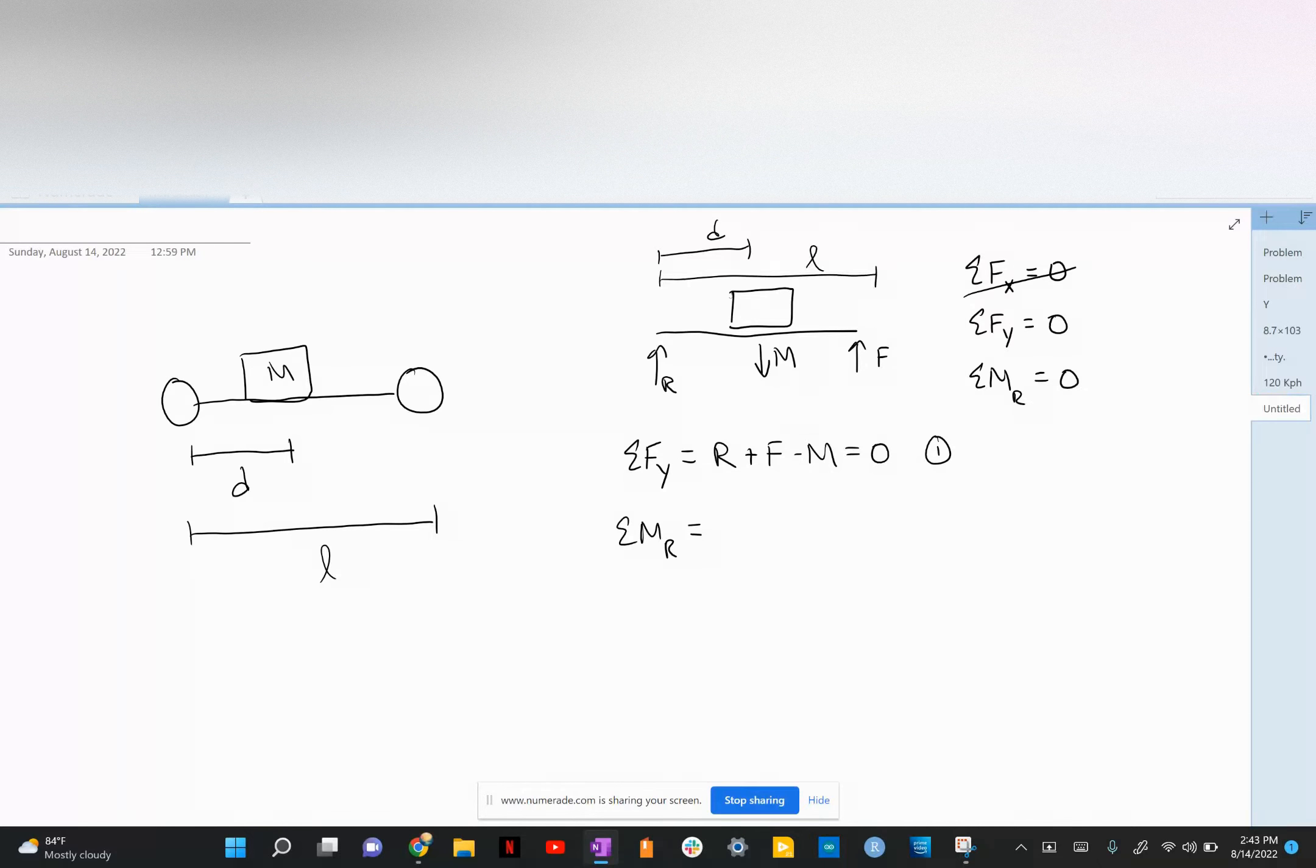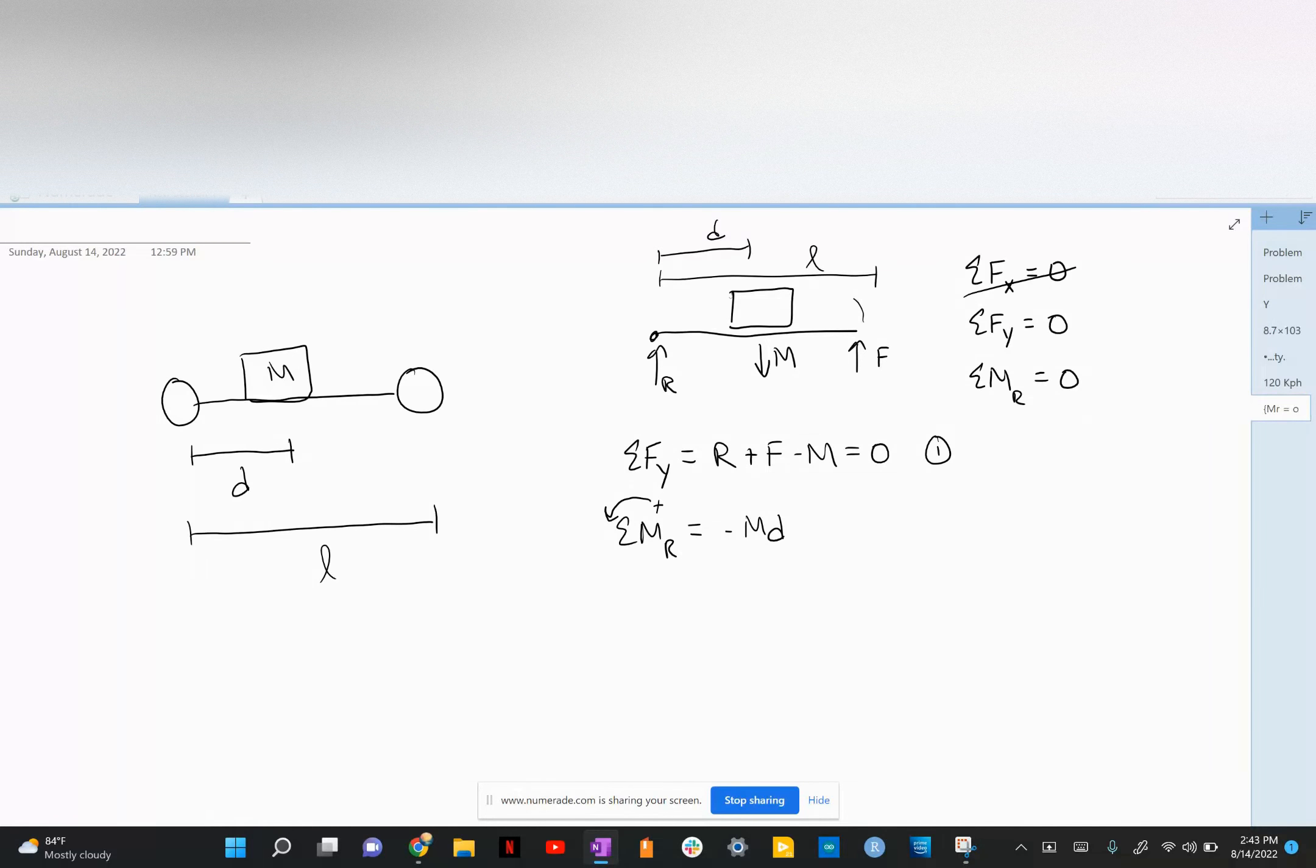Clockwise is our positive direction. So the weight of the mass M is going counterclockwise around the point R, so it's negative MD. And the force F is going counterclockwise around the point R, so it's a positive, plus FL equals zero.